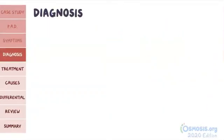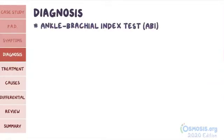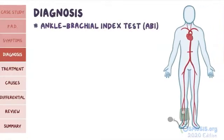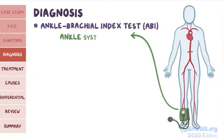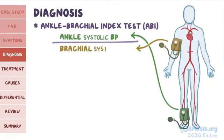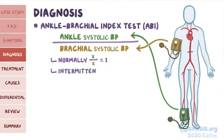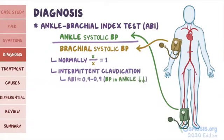For diagnosis, when there's suspicion of peripheral artery disease, an ankle brachial index test, or ABI, is performed. ABI is the ratio of ankle systolic blood pressure to brachial systolic blood pressure. Normally, both pressures should be equal, and so the ratio should be equal to 1. In individuals with intermittent claudication, the ABI usually lies somewhere between 0.4 and 0.9, since the blood pressure in the ankle is decreased.